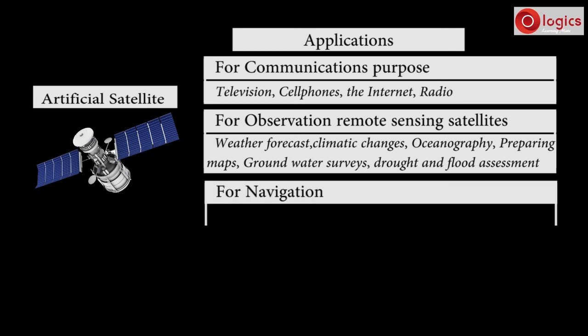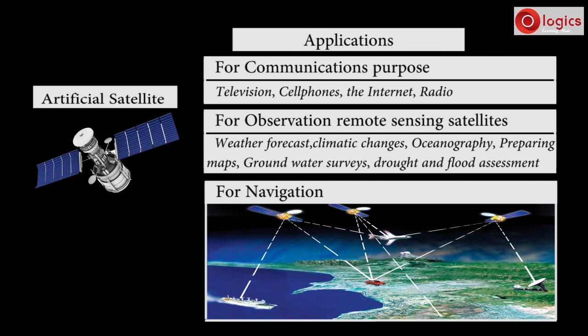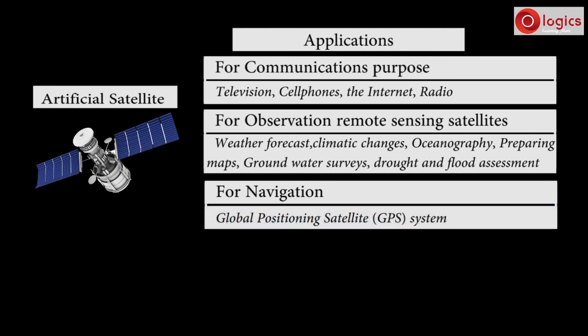For navigation, global positioning satellite, GPS, system is used which provides location and time information anywhere on the earth by taking signals from satellites.